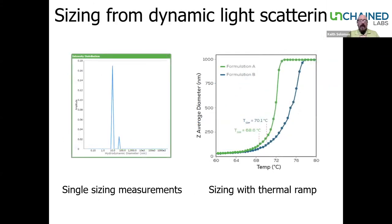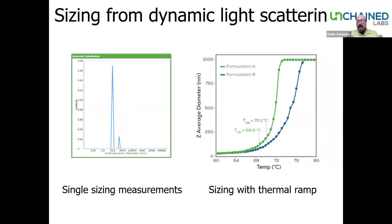UNCLE also does really nice dynamic light scattering. On the left you can see a single DLS measurement of an antibody showing the expected hydrodynamic diameter of around 10 nanometers and a slightly larger peak of some aggregates. On the right, you can see DLS as a function of temperature for two different formulations of a protein, capturing the change in hydrodynamic diameter as a function of both temperature and formulation using the UNCLE instrument.